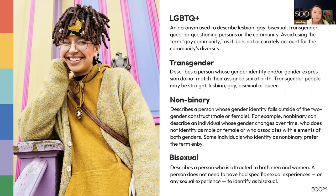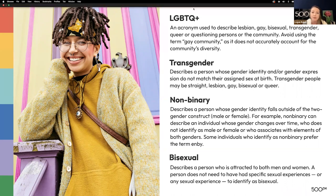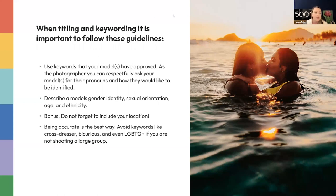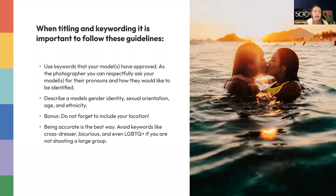Other terms: transgender; non-binary — describes a person whose gender identity falls outside of the two gender constructs, male or female; and bisexual — describes a person who's attracted to both men and women. Best practices on keywording and titling: use keywords that your model has approved. Have conversations with your models — as a photographer, you can respectfully ask your models for their pronouns and how they'd like to be identified. Describe a model's gender identity, sexual orientation, age, and ethnicity. Don't forget your location — that can really help your content surface more. Avoid keywords like cross-dresser or bi-curious.